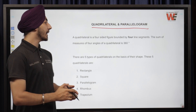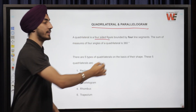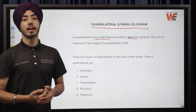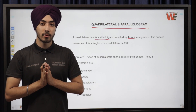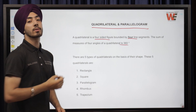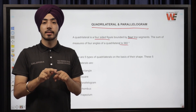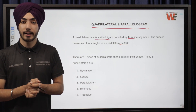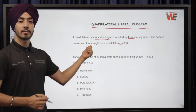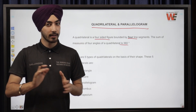A quadrilateral is any four-sided figure bounded by four line segments. The sum of angles of a quadrilateral is 360 degrees. As we know that in a triangle the sum of angles is 180 degrees, similarly in a quadrilateral the sum of angles is 360 degrees.